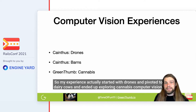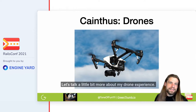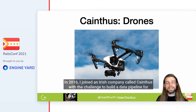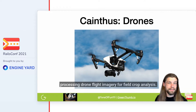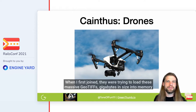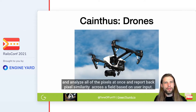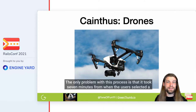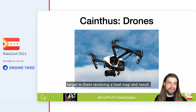My experience actually started with drones and pivoted to dairy cows and ended up exploring cannabis computer vision. In 2016, I joined an Irish company called Cainthus with the challenge to build a data pipeline for processing drone flight imagery for field crop analysis. They switched to dairy cow monitoring in one of the most interesting pivots I've experienced at a startup. When I first joined, they were trying to load these massive GeoTIFFs — gigabytes in size — into memory and analyze all of the pixels at once, reporting back pixel similarity across a field based on user input. The only problem was that it took seven minutes from when the user selected a target to them receiving a heat map.